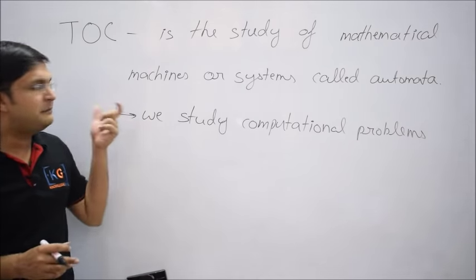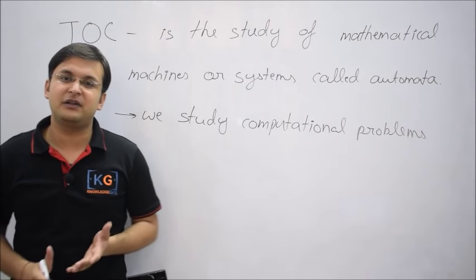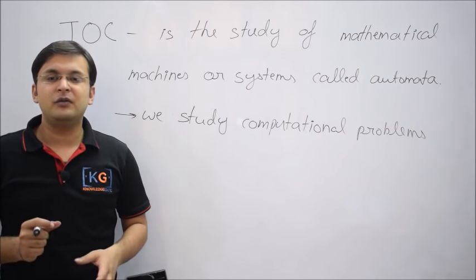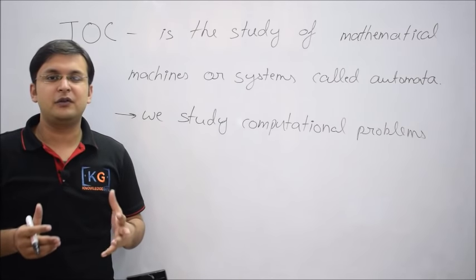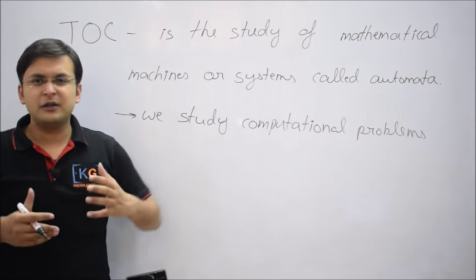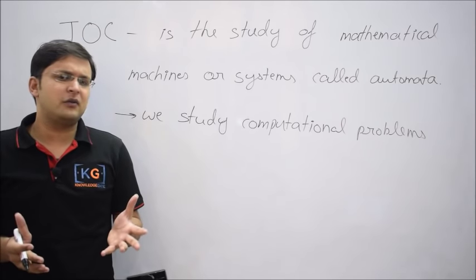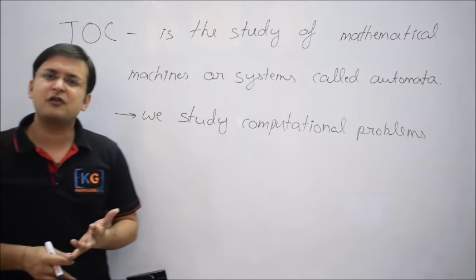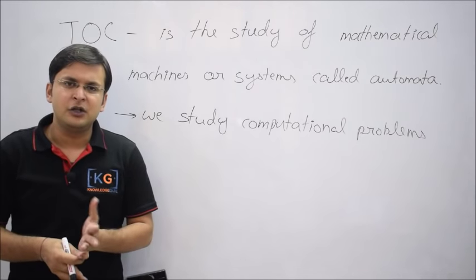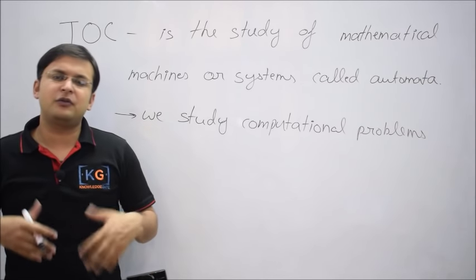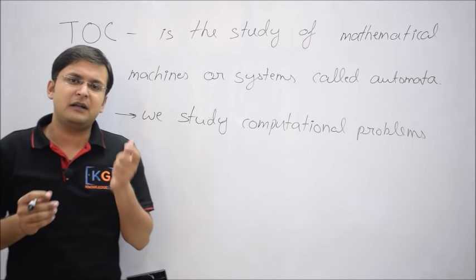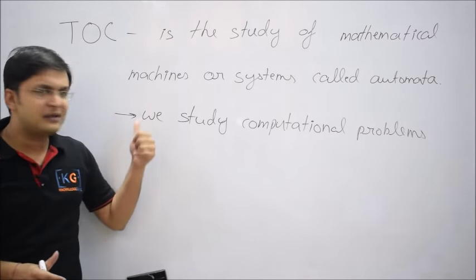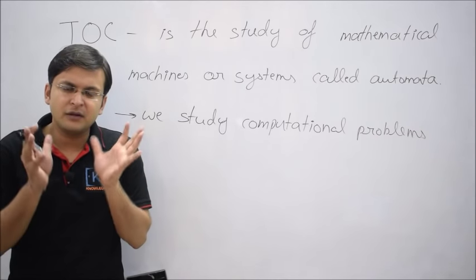Let's understand the basics of Theory of Computation. In algorithms, we take a problem and try to solve it by writing a better algorithm. The criteria for a better algorithm are minimum time or minimum space — space complexity and time complexity are the most important. Whether an algorithm is good or bad totally depends on how fast and in how little space it can solve a problem.